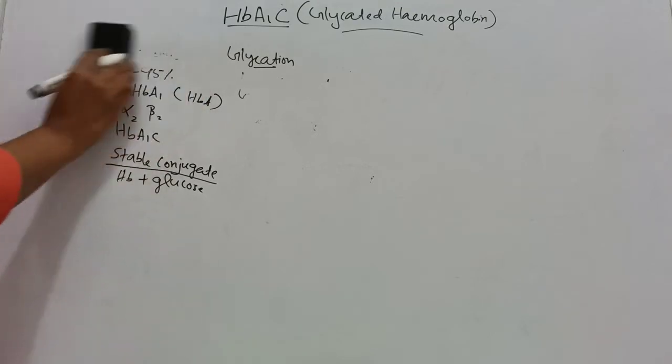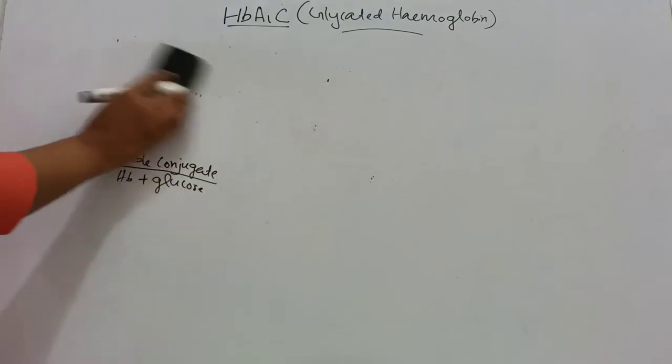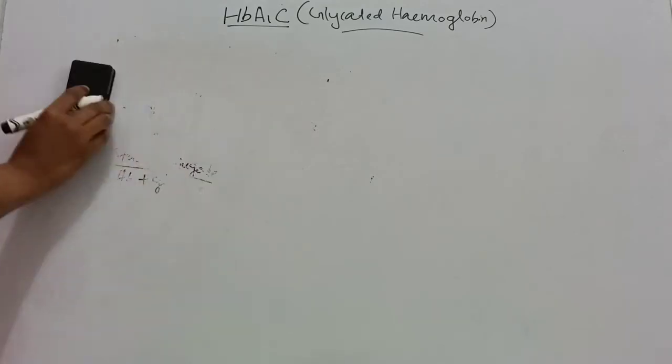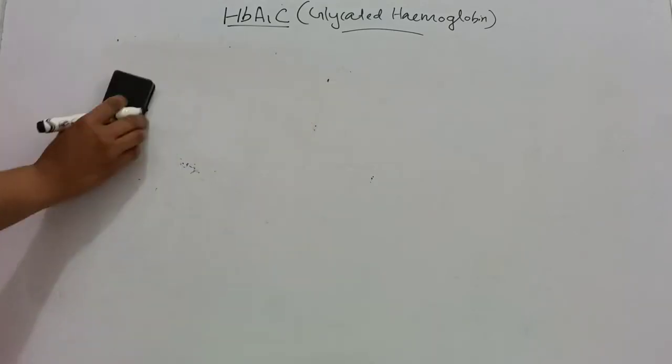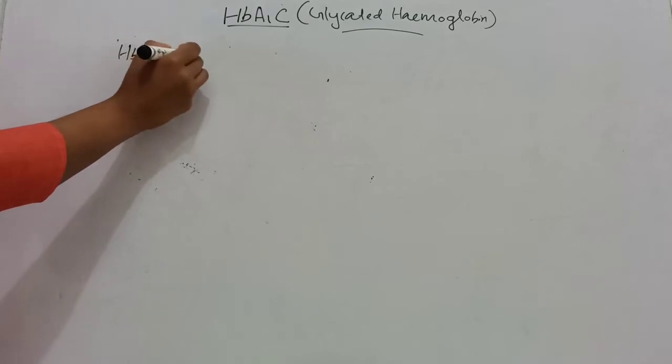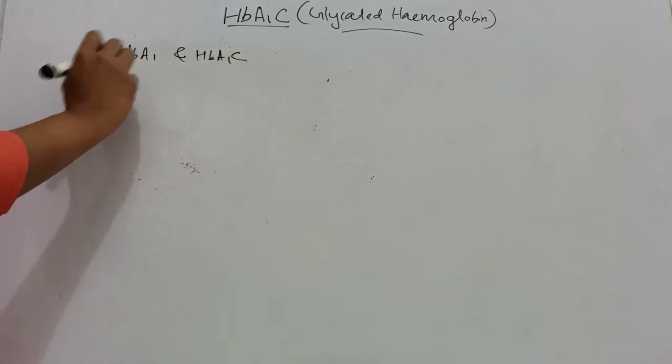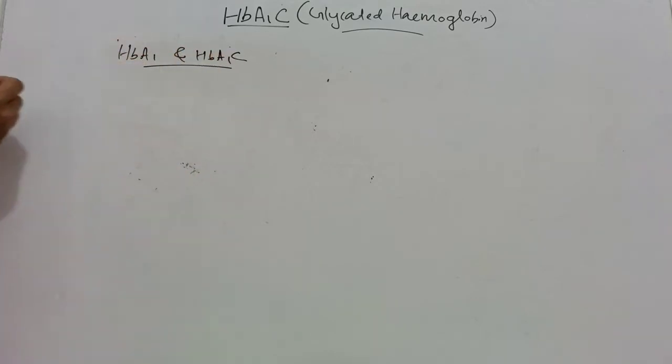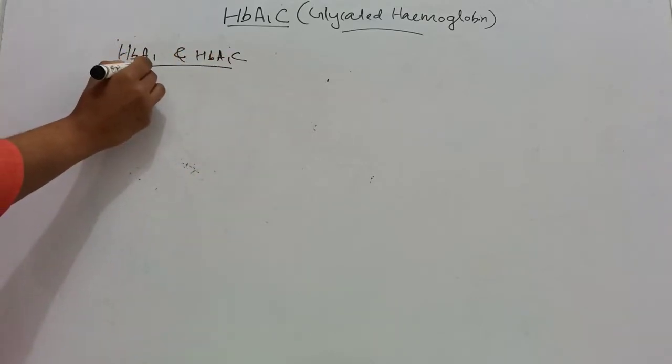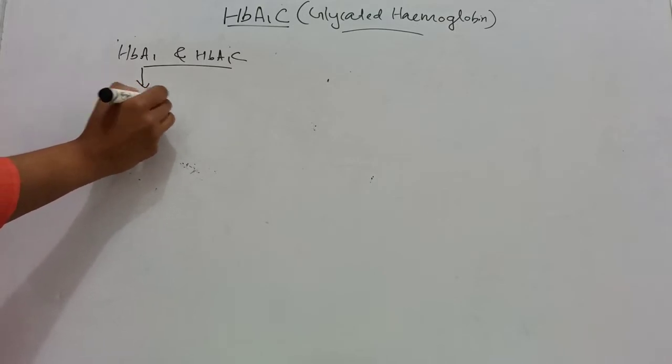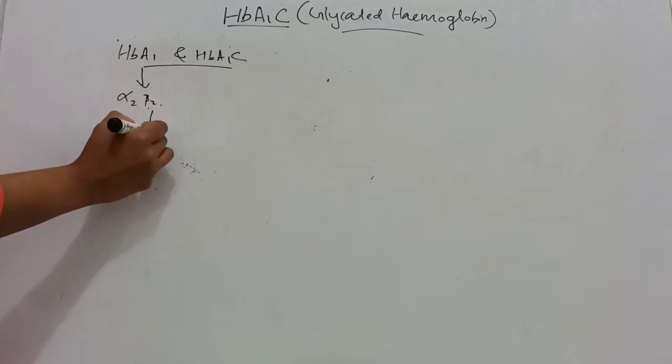The amino acid sequence of HbA1 and HbA1c are the same. In HbA1, the beta subunit (alpha 2, beta 2) has valine in the N-terminal end.